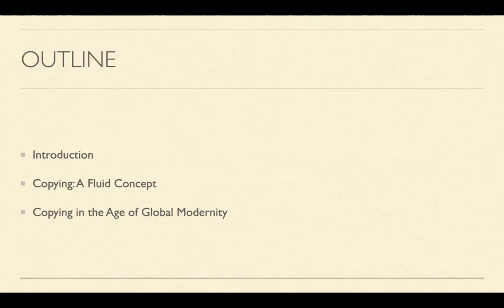This is the outline of today's talk. I will begin by talking about the concept of copying in pre-modern China and then move on to discuss the modern period. The modern period is a very important era because the field of art history began during this period. Writings on the history of Chinese art appeared in Europe in the late 19th century and were quickly followed by Japanese and Chinese scholarship.